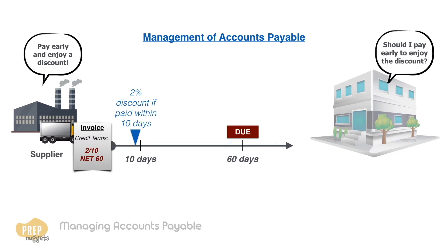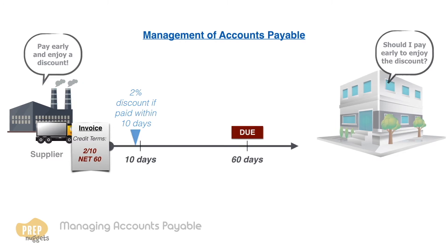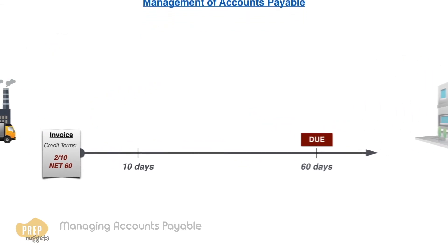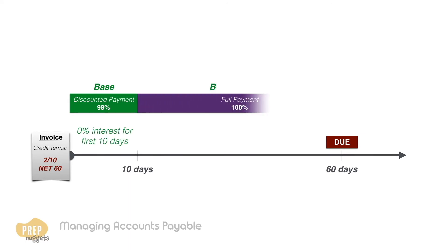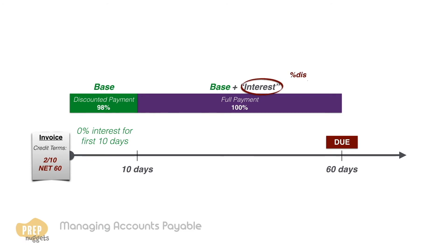Thankfully, there's a systematic approach to determine which is the better option for the firm. If we make the discounted payment the base, we can see it as 0% interest for the first 10 days. After 10 days, the full payment is required, so we can view the discount as an interest to be paid. The percentage interest is the discount divided by 1 minus the discount.